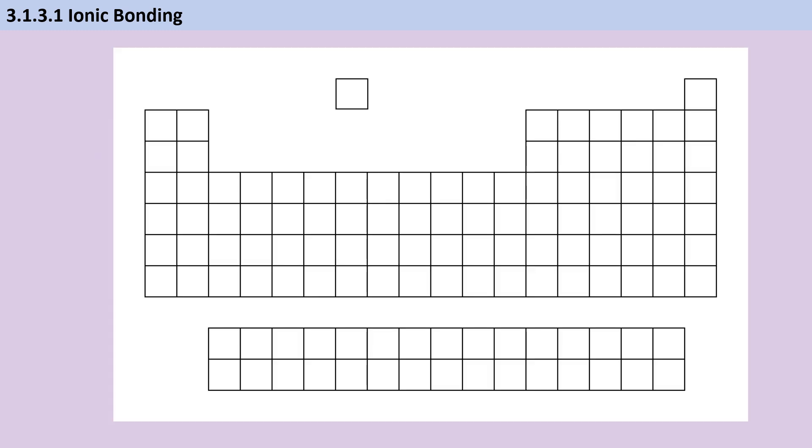You learned at GCSE that all of the elements in group 1 make ions with a single positive charge, everything in group 2 makes ions with a 2+ charge, everything in group 6 makes ions with a 2- charge, and all of the halogens in group 7 make ions with a single minus charge. You're now also familiar with the idea that the transition metals have multiple stable oxidation states, and so they can make multiple different charged ions. And the oxidation state of an element is going to be indicated using Roman numerals.